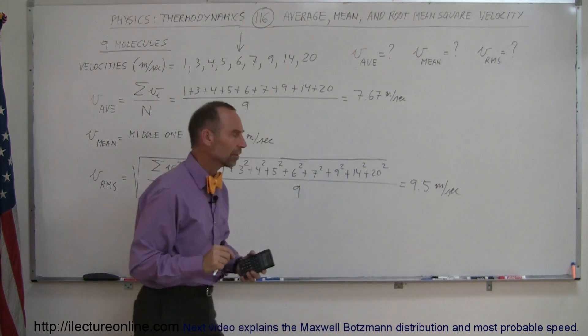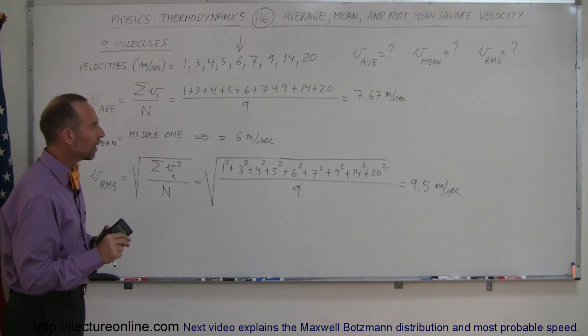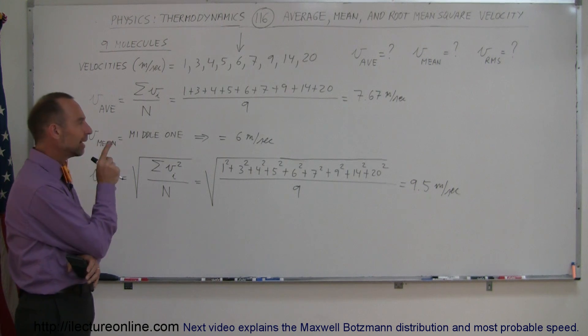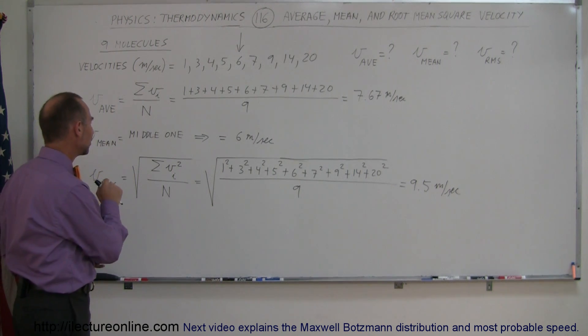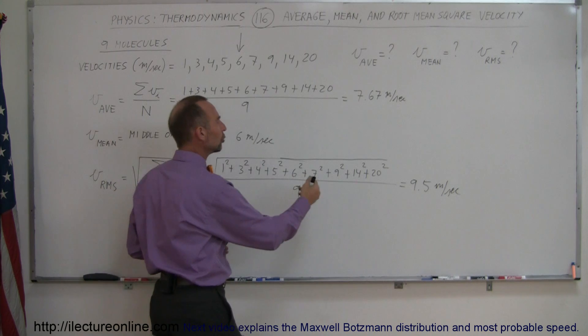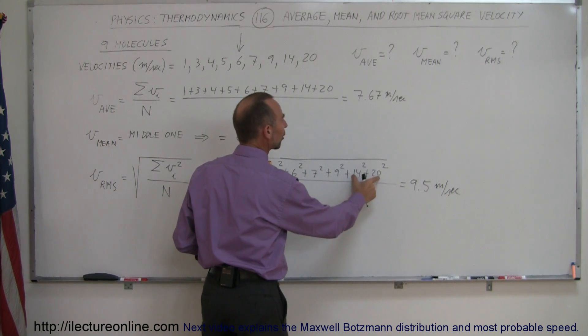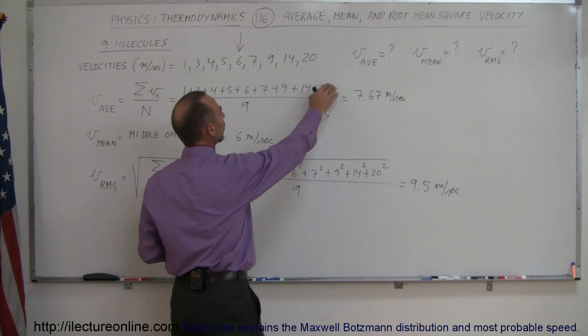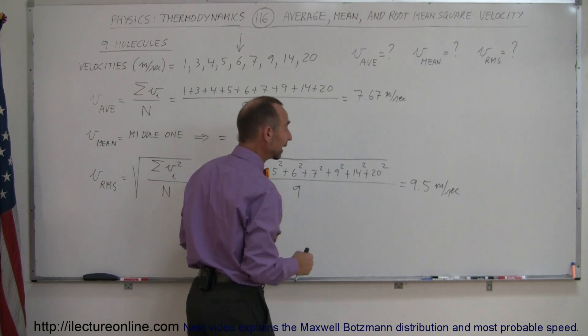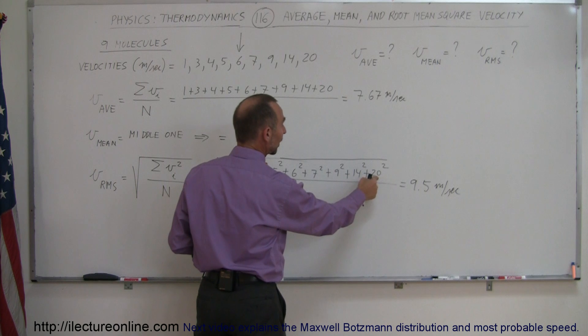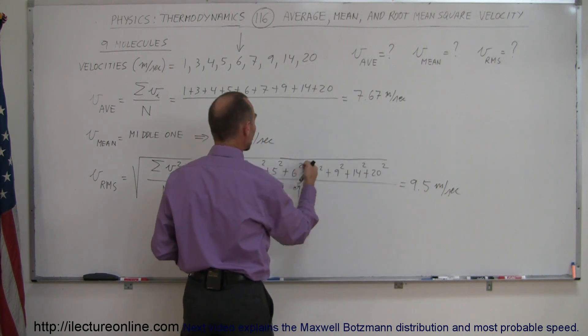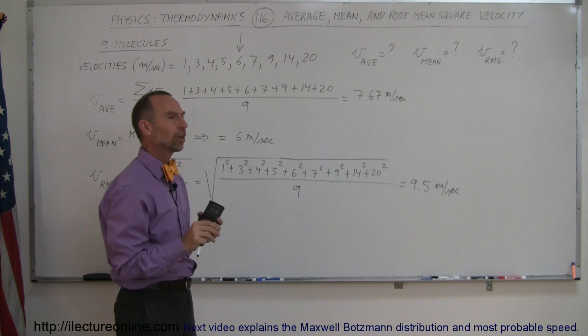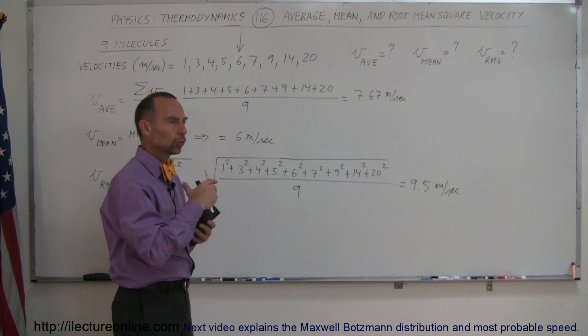That's interesting here. Notice how the RMS velocity is larger than the average and the mean. That is because the RMS velocity is really skewed by the fact that there's some large values. It gives extra importance to the molecules that have a large value because we square that before we add it all together. And so this squared and this squared together is far larger than all the other ones squared together. And so therefore it pushes that RMS velocity to a larger value.